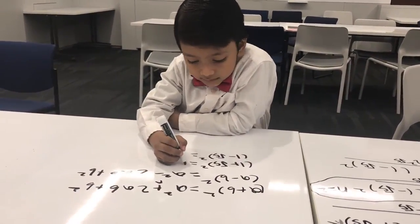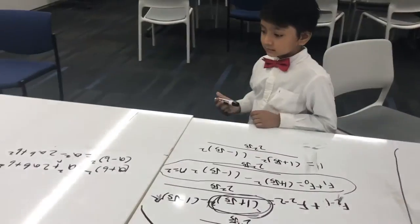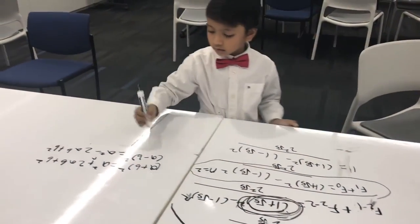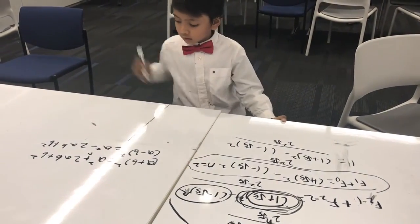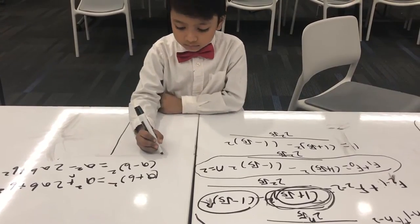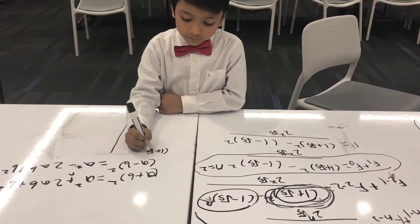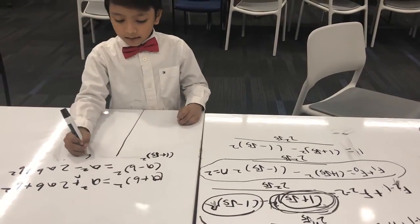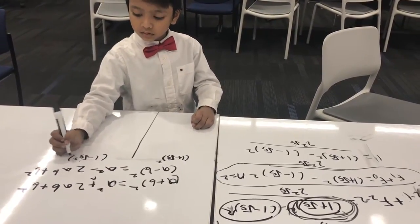So if we're looking for 1 plus square root of 5 squared and 1 minus square root of 5 squared, we use these two formulas. So 1 is a and square root of 5 is b. I'm going to solve this one and this one.